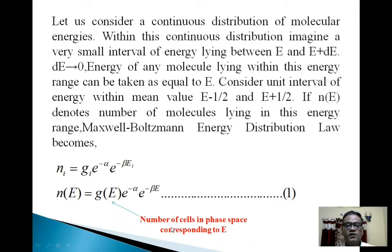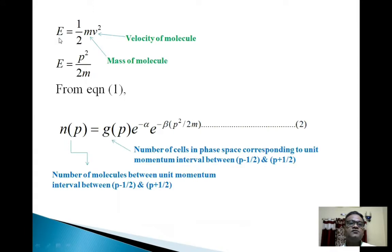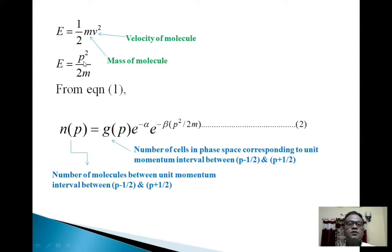Now, you know very well what phase space is — it is a 6-dimensional space with 3 position coordinates and 3 momentum coordinates. The combination of these two is phase space. Here E = (1/2)mv², where E is energy, m is mass of the molecule, and v is velocity of the molecule. So we can write E = p²/2m, where p is the momentum of the molecule, given by the product of mass and velocity.